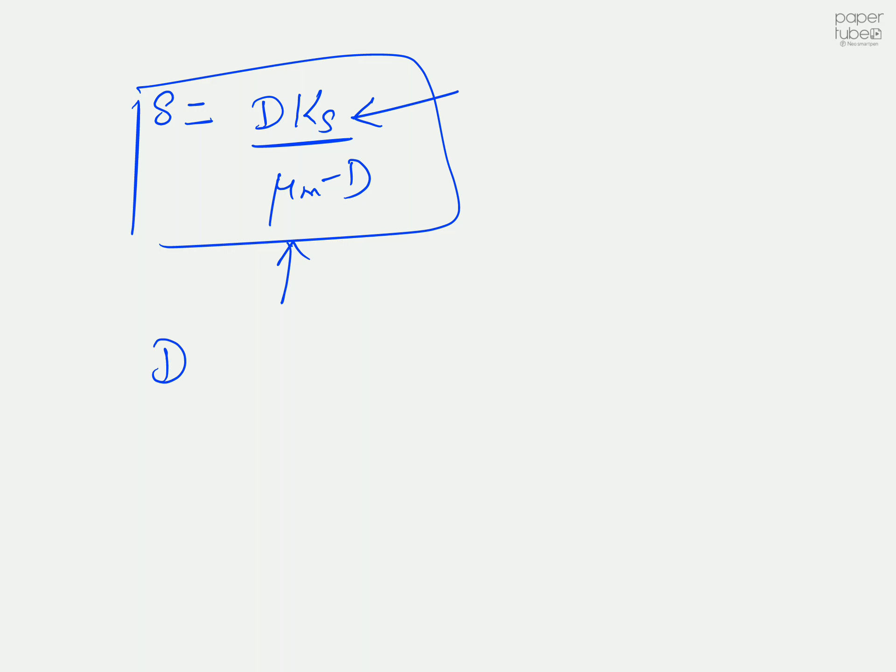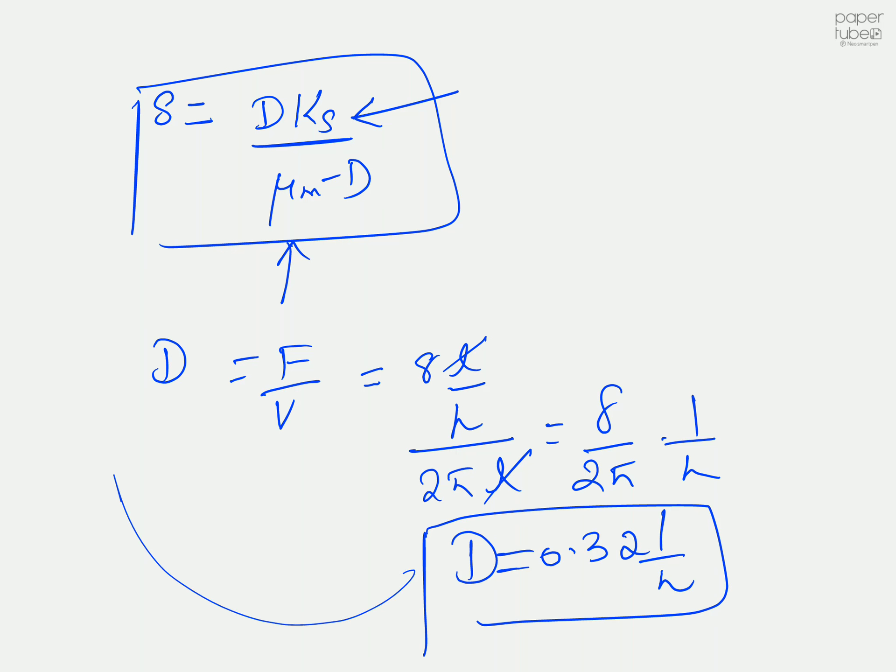You need the dilution factor. Dilution factor is flow divided by volume. This equals 8 liters per hour divided by 25 liters. Liters cancel, so 8 by 25 equals 0.32 per hour. This is your dilution factor.